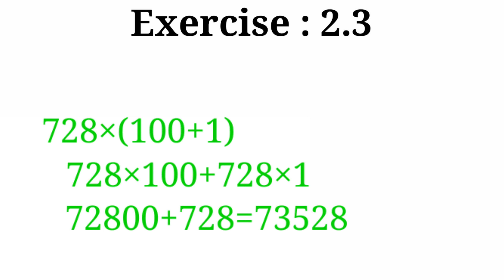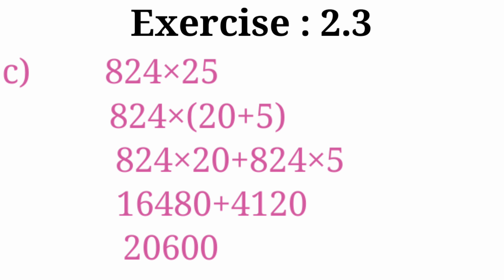For 728 × 101, we separate 101 into 100 plus 1, keeping it in brackets. Then we multiply both numbers with 728: 728 × 100 plus 728 × 1, which gives 72800 plus 728, and when we add both terms we get 73528. Now the next example: 24 × 25. We separate 25 into 20 plus 5, then multiply: 24 × 20 plus 24 × 5, which gives 480 plus 120, and when we add both terms we get 600.